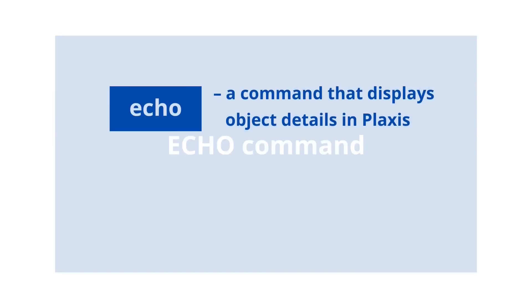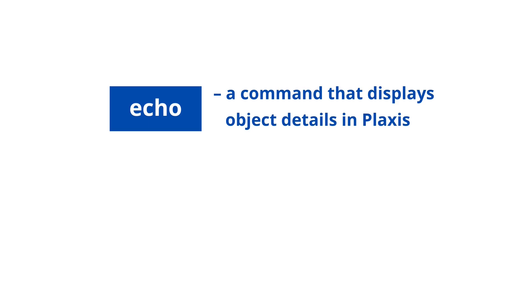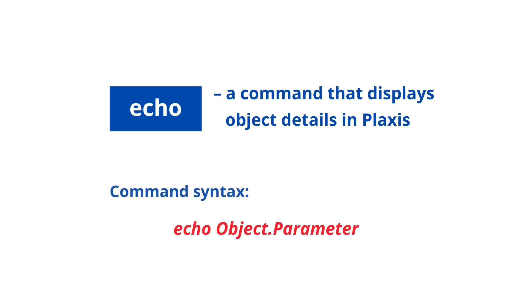ECHO COMMAND is a command that displays object details in Plaxis. The command syntax is: echo object dot parameter. Consider several examples of using the ECHO COMMAND.